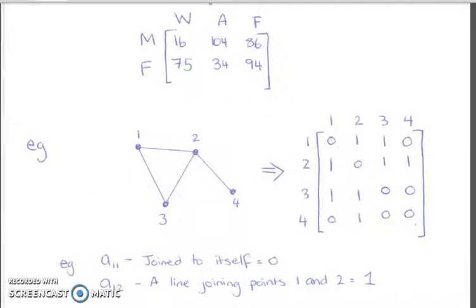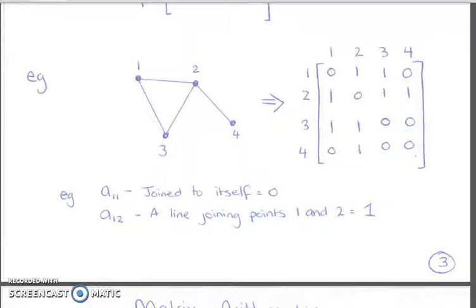We can also show a diagram in the form of a matrix. One being that it's directly connected to. So one is directly connected to two. If there was a circle coming back, then one to one would be one. One to four, however, is zero because it's not directly connected. So in this case, we're not talking about steps, just talking about directly connected. And there's some information there. So A11 joined to itself is zero.